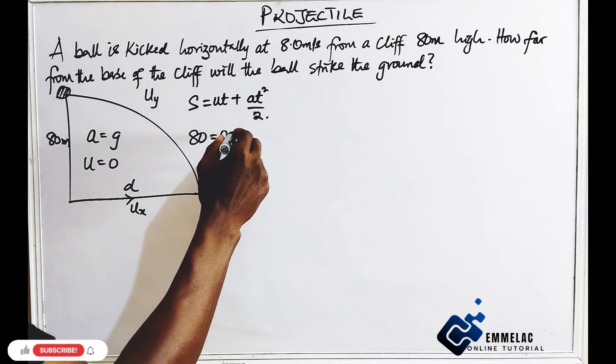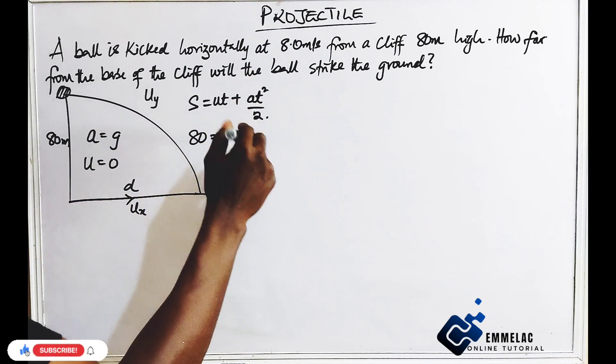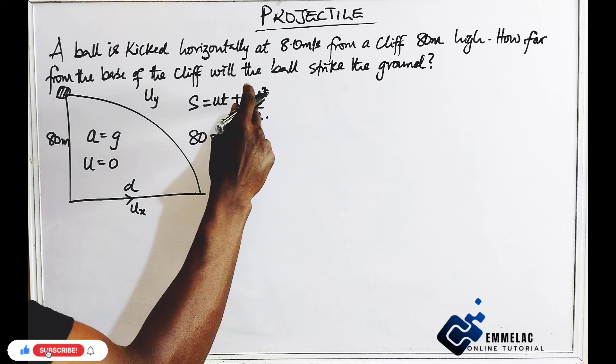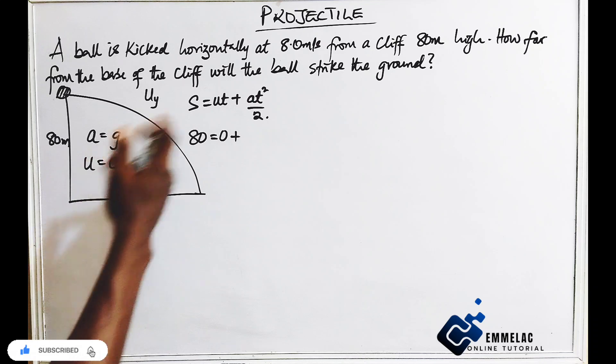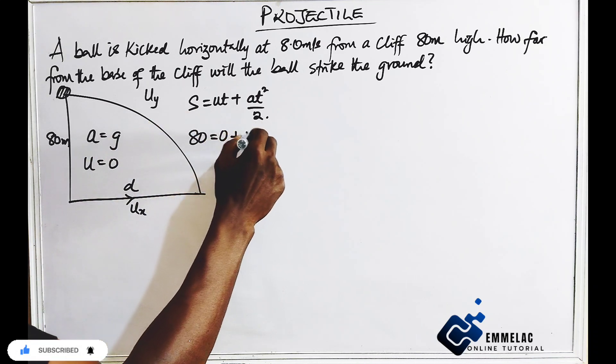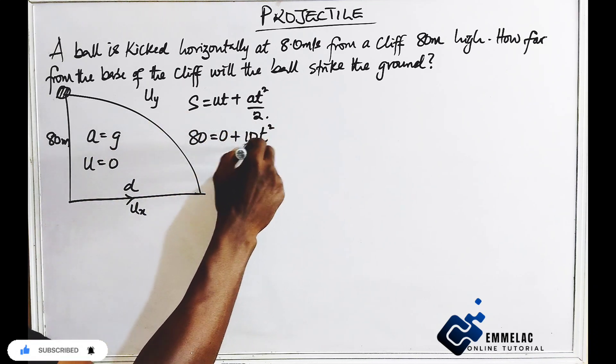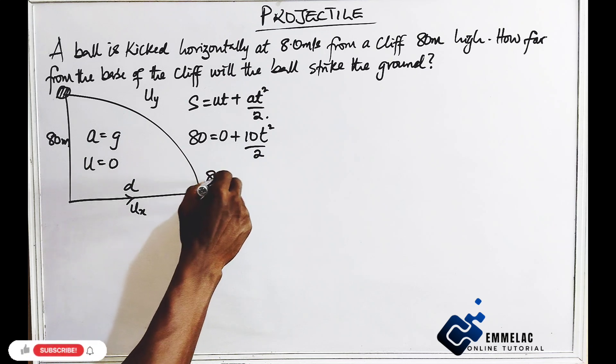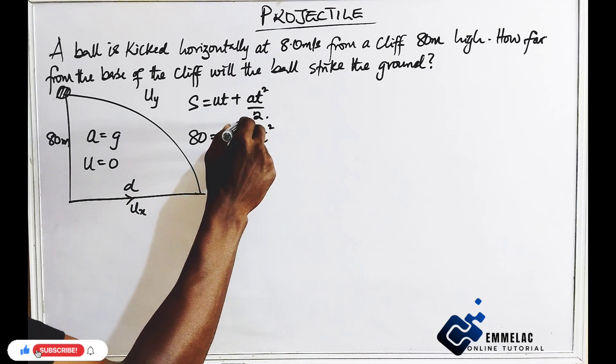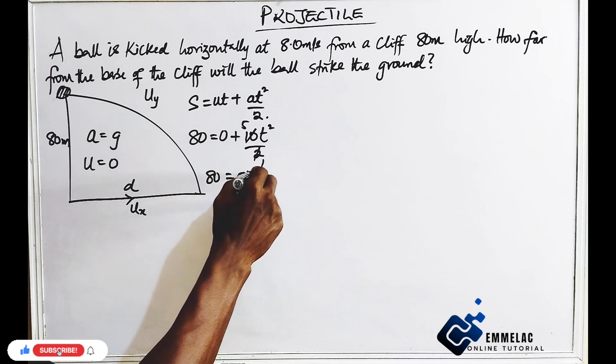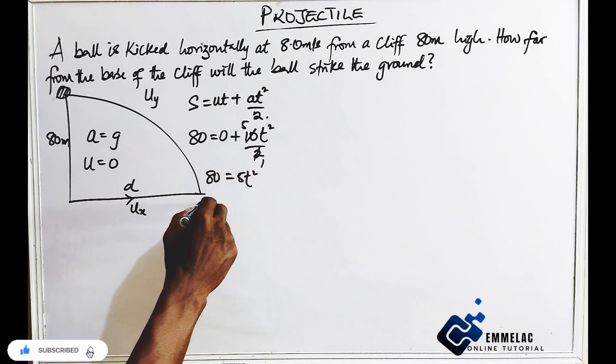So here we have a, that would be a. We can make it of 10. Then t squared over 2. So here we have 80 equals to 2 cancels, 5, we have 5 t squared. So t squared.